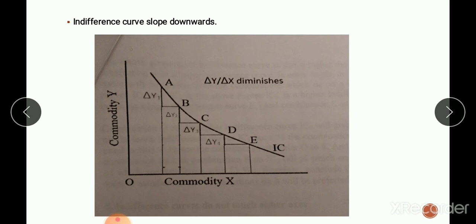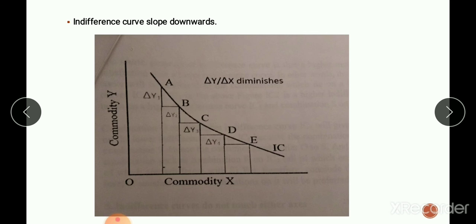The second property is that the indifference curve slopes downwards. This implies that if a consumer consumes more of one good, he must consume less of another good. If a consumer decides to have more units of commodity X, he will have to reduce the number of units of commodity Y, so that the total utility remains the same. In order to remain on the same level of satisfaction, the consumer must sacrifice one commodity for another — he sacrifices Y to gain X. That is why the indifference curve slopes downwards.